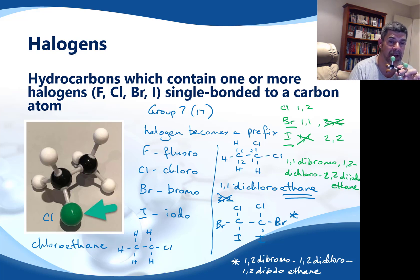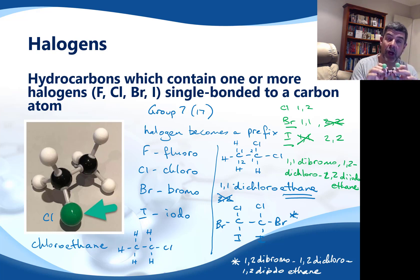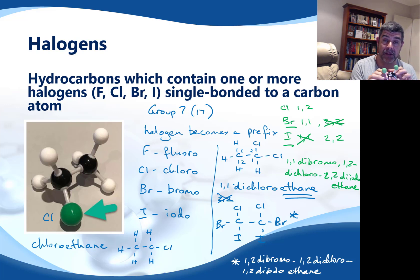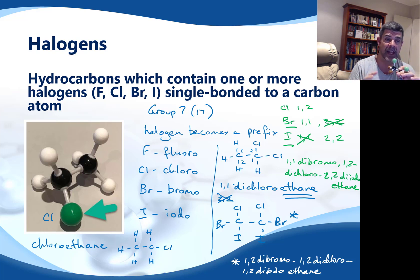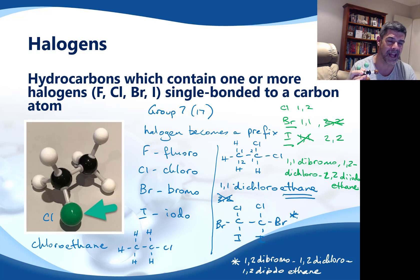Hopefully it makes sense — each of these different names. There are a lot of rules to remember in organic nomenclature, and the only way to really get these set in your head is to grab the model kits, have a look at a lot of examples, draw structural formulas, and practice naming them. This is one of those areas where the more practice you get, the more comfortable you'll be, and the more compounds you'll be able to name.